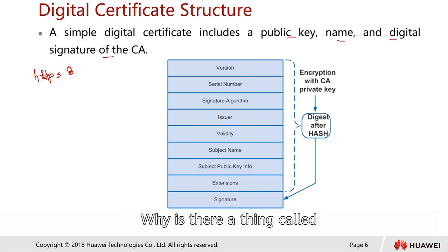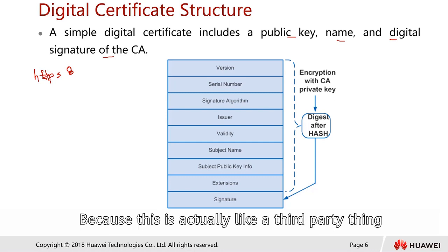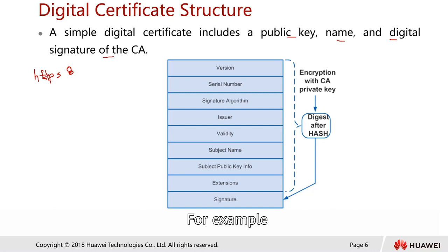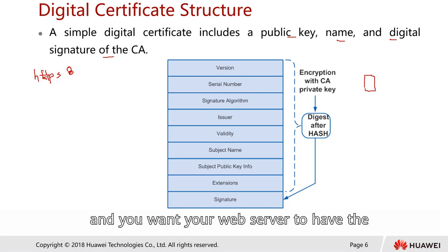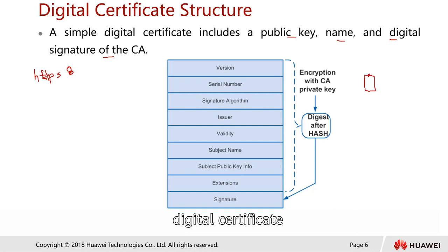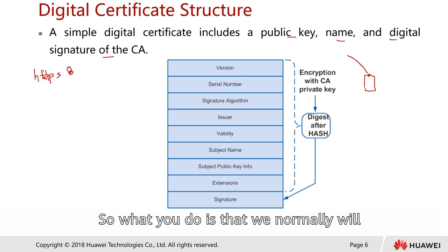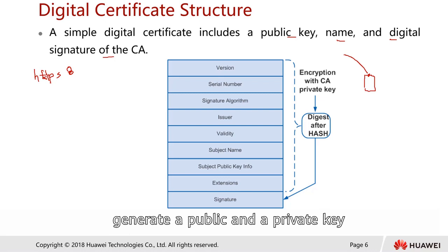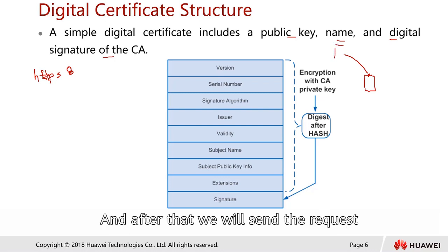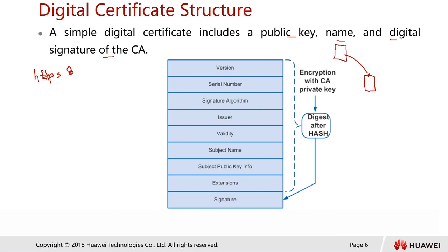Why is there a digital signature of a CA? Because this is a third-party verification. For example, you have a web server and you want it to have a digital certificate. What you do is generate a public and a private key, and then send a digital certificate request to a CA — or in this case, a root CA. The CA will then sign the certificate that you requested and send it back to you.